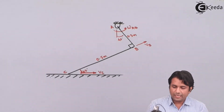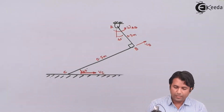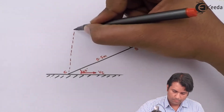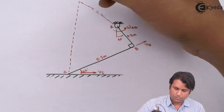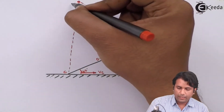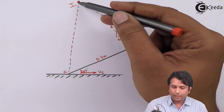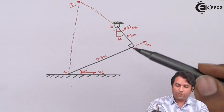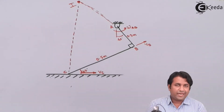We can see that the velocity is in this direction and in this direction. If I drop a perpendicular from these two points, they are going to meet at point I. Now I need to find out the lengths IB and IC. For that I can use the sine rule or any other convenient method.